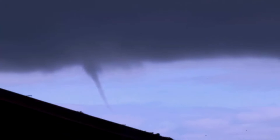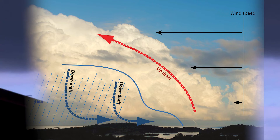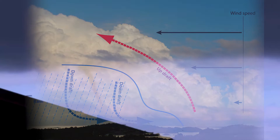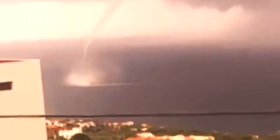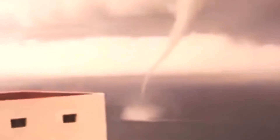Waterspouts can form when winds blowing in two different directions run into each other. Along the line where the two winds meet, there is a lot of rotating air near the surface. The collision of the two winds makes air move upwards because it has nowhere else to go. This rising air carries water vapor high into the sky, where it creates rain showers, storms, and cumulus clouds.